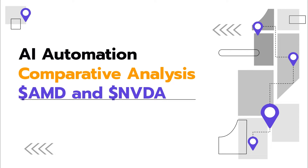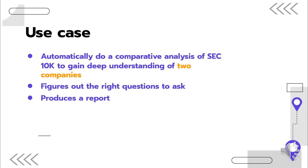In this video, we're going to look at how to do a comparative analysis of two companies, AMD and NVIDIA, with their SEC 10K annual report. Our crew of agents is going to automatically do this comparative analysis. At the end, the crew of agents will allow us to gain deep insight into those two companies by doing a comparative study of their strengths and weaknesses, as well as various aspects of the business models. It's going to figure out all the detailed right questions to ask each of the companies and then produce a report consolidating a long-term implication view.